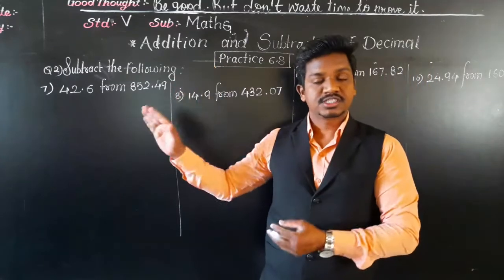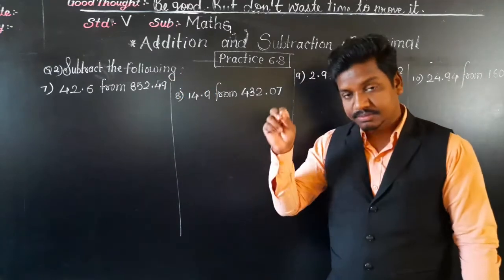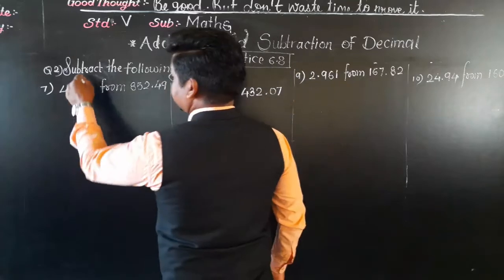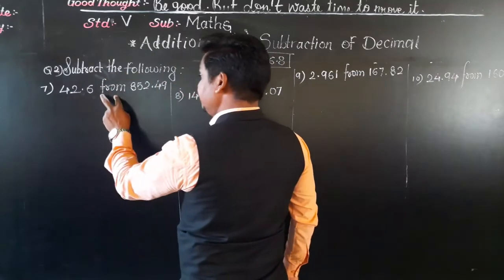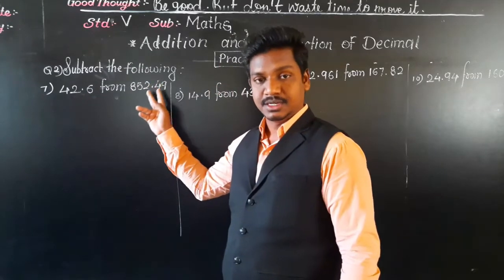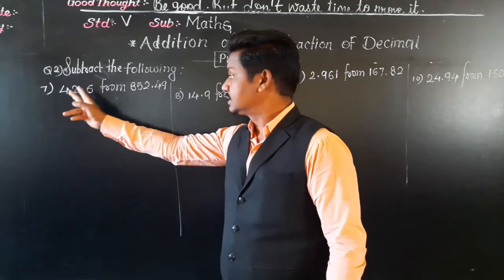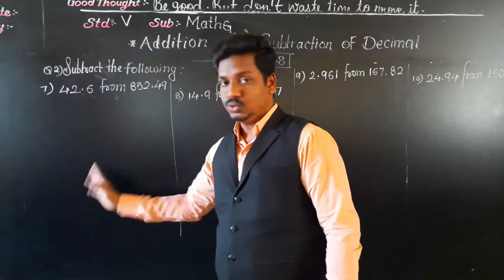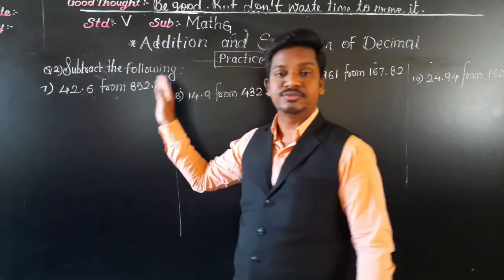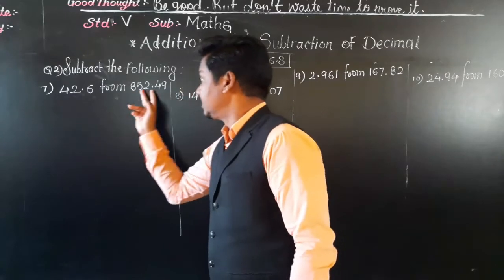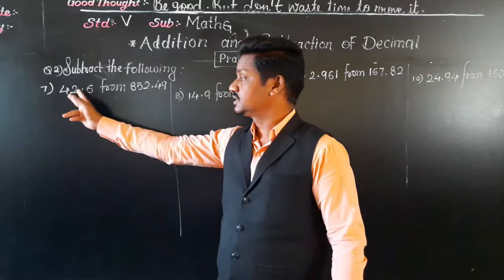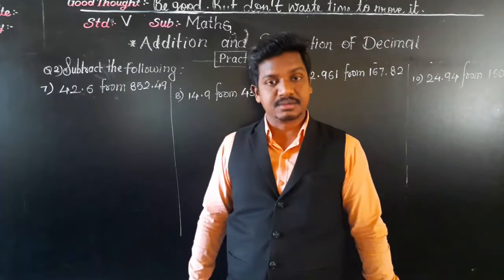Let's learn the subtraction of decimals. Once again I repeat: first we have to make both decimals like, meaning we make their decimal places equal. Then arrange vertically and subtract. Whenever a problem says 'subtract 42.6 from 852.49,' the number written after 'from' is the greater number and goes on top. The first number is smaller and goes below. Or you can simply compare: the greater number comes on top, the smaller number goes below, and we subtract the smaller from the greater.